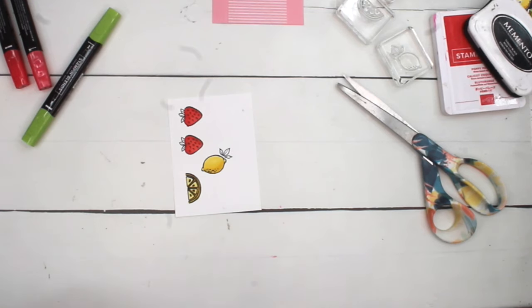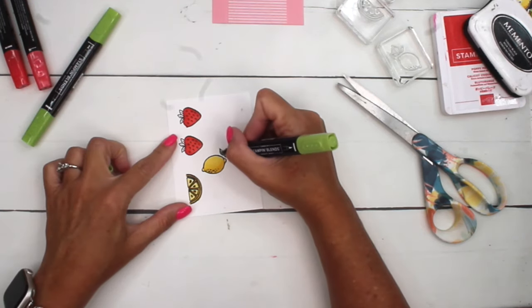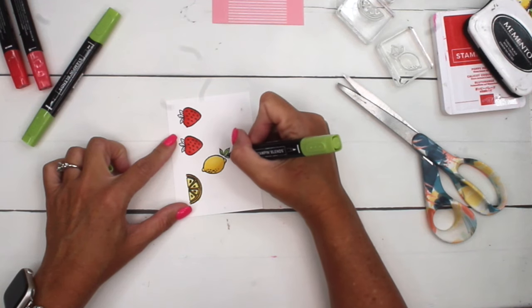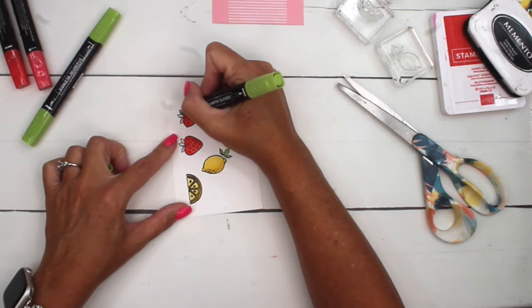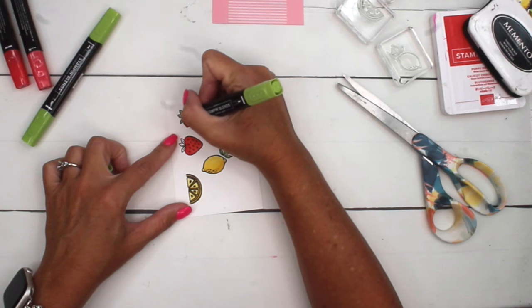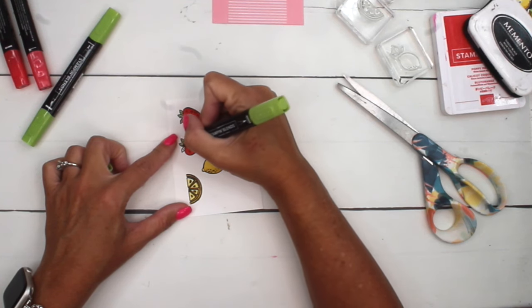Now for this lemon, I'm going to go around and color the whole thing light. And then I'm going to get my dark Daffodil Delight and go around the rind and in between each of the little segments like that. Last but not least, I'm going to take my Granny Apple Green Light and just color in all of the leaves.